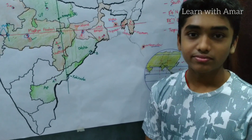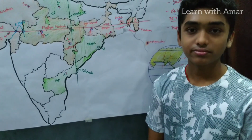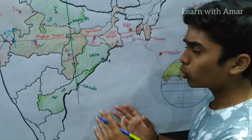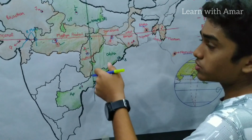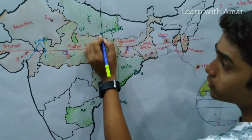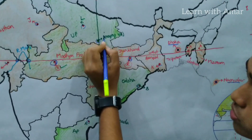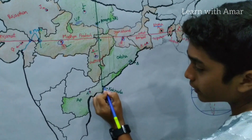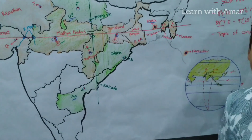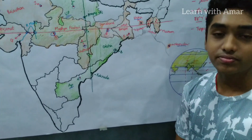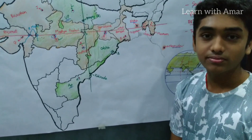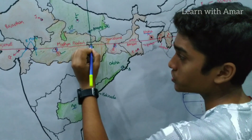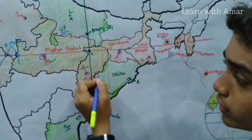Which major cities of India are located near the Indian Standard Meridian? The cities located on the Indian Standard Meridian are Prayagraj — formerly known as Allahabad — situated in Uttar Pradesh, and Kakinada, situated in Andhra Pradesh. Name the state where the Tropic of Cancer and the Indian Standard Meridian intersect. These both intersect in Chhattisgarh.